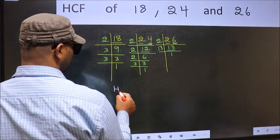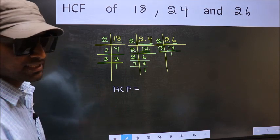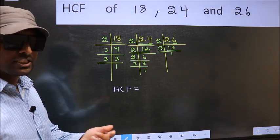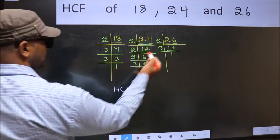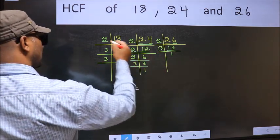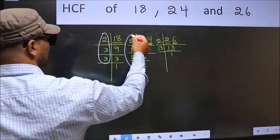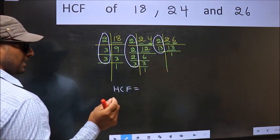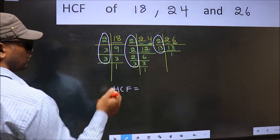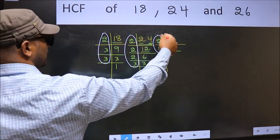Therefore, our HCF is the product of the numbers which should be present in these 3 places, that is, here and here and also here. So, now, let us find the numbers which should be present here, here and also here.